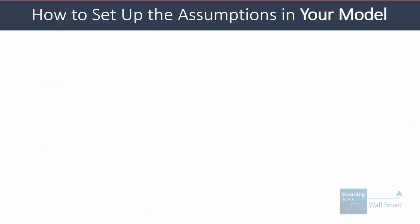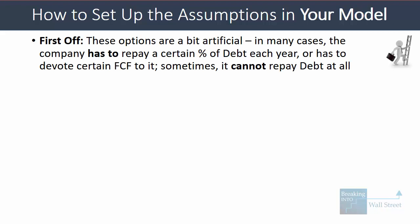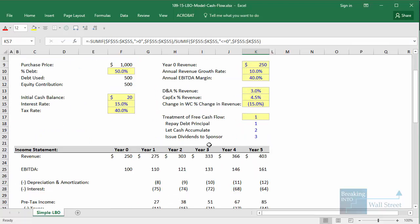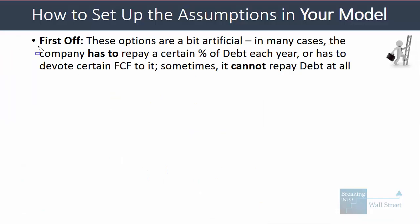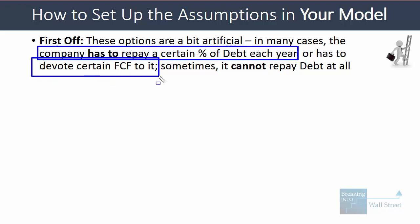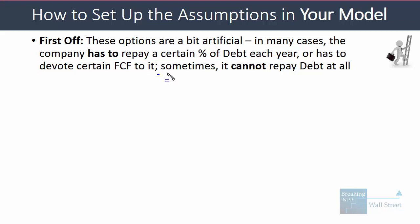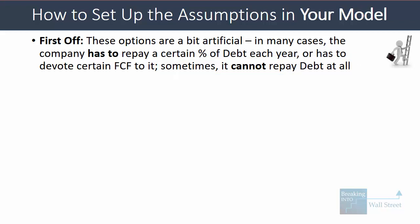Now let's talk about how to set up assumptions in your model. These scenarios are a bit artificial — we're assuming the company can do anything it wants: repay as much debt principal as it wants, let everything accumulate to cash, or take all free cash flow and issue it as dividends. In real life, debt terms often state the company must repay a certain percentage, or a cash flow sweep may require devoting 50% or 25% of free cash flow to debt repayment. Conversely, some companies raise debt where they cannot repay principal at all until exit or maturity. So these options are somewhat artificial and you won't always face this exact decision.